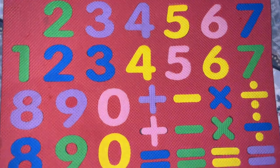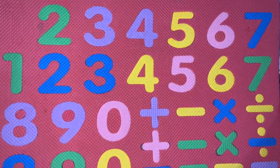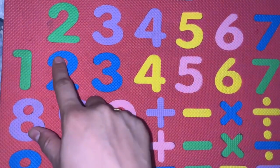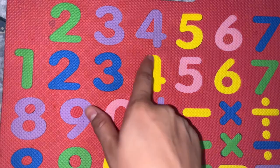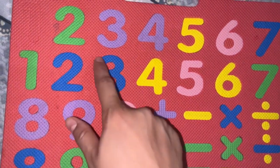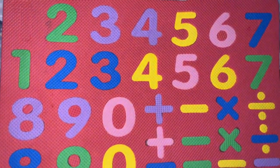Now the next question is: what comes between 2 and 4? So 2 and 4 — what comes between 2 and 4 is 3. T-H-R-E-E, 3.